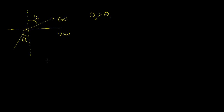Now what I want to figure out in this video is: is there some angle, depending on the two substances that the light travels in, where if this angle is big enough — because the refraction angle is always bigger than the incident angle when moving from a slow to a fast medium — is there some angle theta 3 where that is large enough that the refracted angle is going to be 90 degrees, so that light is never going to escape into the fast medium?